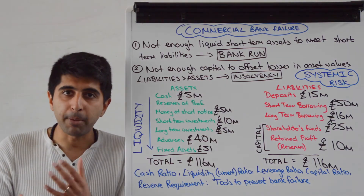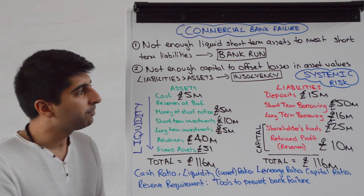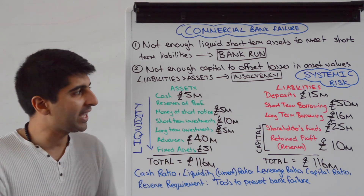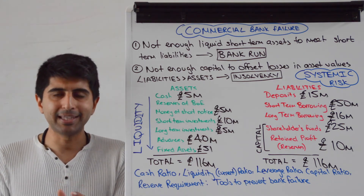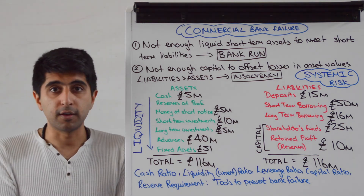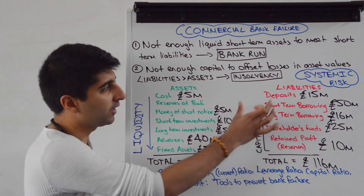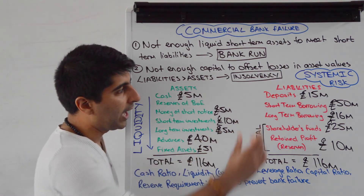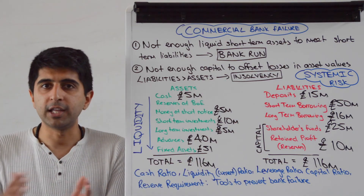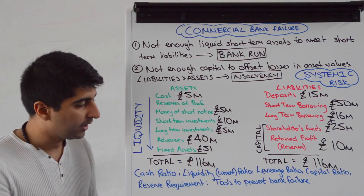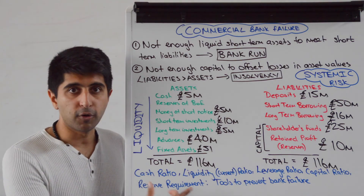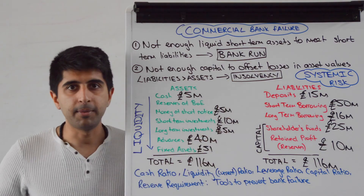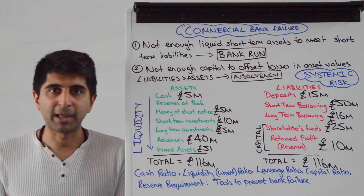You've also got the reserve requirement — imposing or increasing that is by law making sure that when deposits are put in the commercial bank, a certain fraction are kept at the Bank of England in the bank's account there. So imposing or increasing the reserve requirement will make sure that the bank always has enough liquid assets — cash essentially — to meet the needs of depositors or any other short-term liabilities, preventing the risk of a bank run and therefore bank failure.